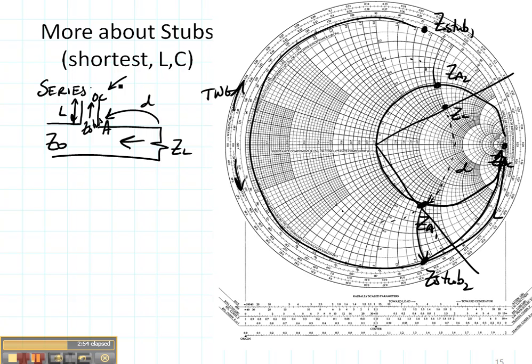Let's suppose that instead of that I had been told I wanted the shortest D, which would have defined that I was using ZA one and consequently Z stub one, and then asked if it should be short circuited or open circuited to have the shortest length of stub.